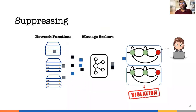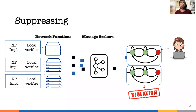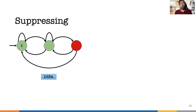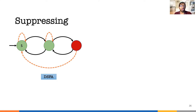Our third optimization is suppressing events by having a local verifier alongside the network function. The suppression further reduces the number of events sent to the global runtime verifier. The transitions in the DSFA that can be suppressed are marked by orange arrows. The suppressed transitions have no impact on detection of the violation. The two self-loops are trivially suppressible because they don't change the state.